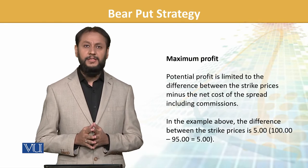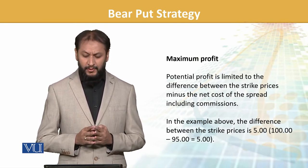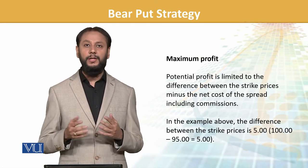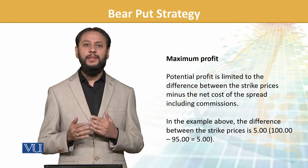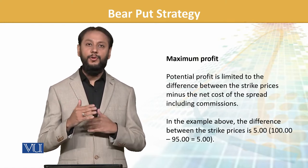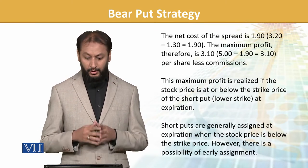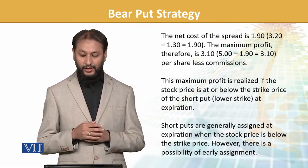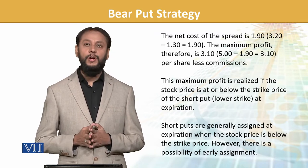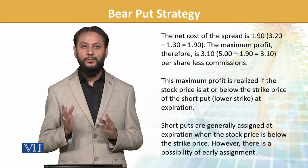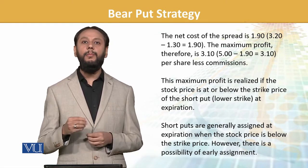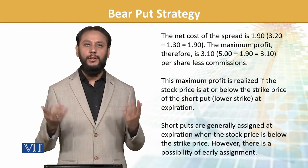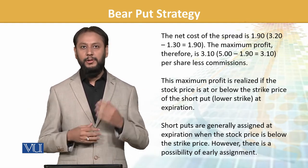Maximum profit हमें इससे कितना हो सकता है — profit is limited to the difference between the strike prices minus the cost of the spread including any commission. इस example में difference between strike price 100 और 95 — یعنی 5 dollars का difference है। और जो हमारी cost है — 3.2 minus 1.3, that is 1.9 — तो maximum profit जो हमें इस transaction से होगा वो होगा 3.1 dollars। یعنی 5 minus 1.9۔ जब contract होगा तो हम 100,000 या 1 million shares की बात कर रहे होंगे, so the value can be very enormous.